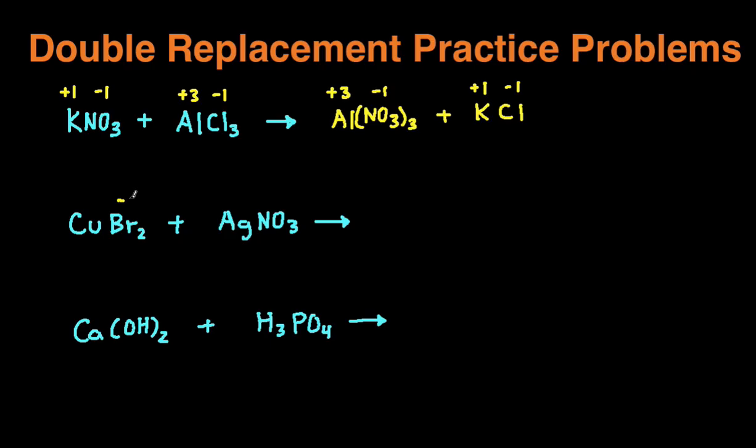Bromine is a halogen, so it's negative one charge. Since we have two bromines, this overall is negative two. So copper then has to be positive two. Ag, although it's a transition metal, always has a positive one charge. Nitrate again is a polyatomic ion with a negative one charge. Then we're going to switch, take our two positive ions, our cations, and switch places.